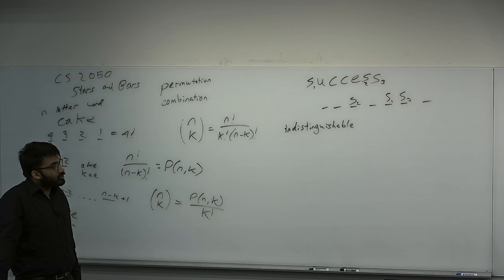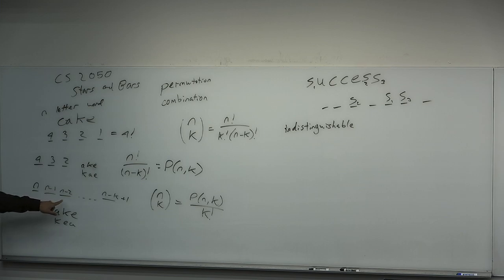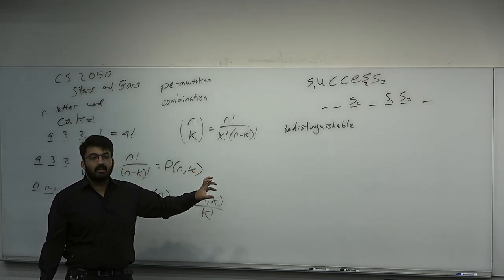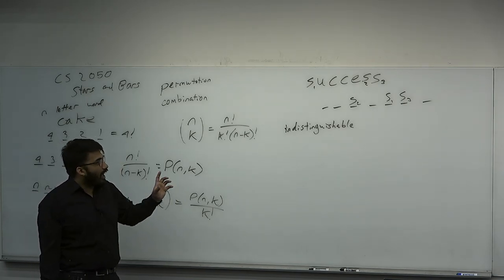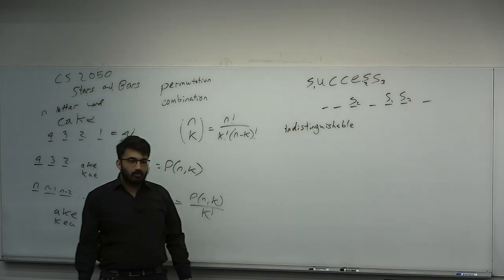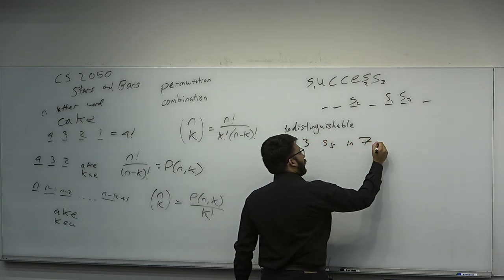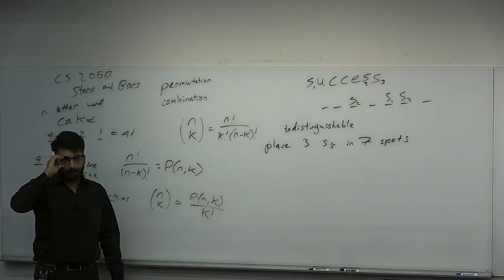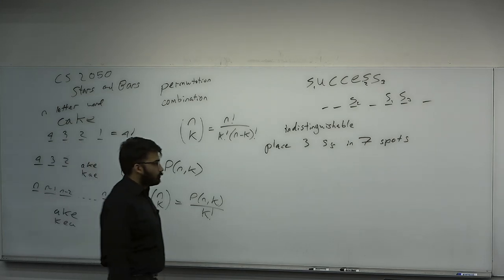What we can do is choose the placements of each letter and then apply the product rule. Suppose we consider s first. We have seven spots. How many ways are there to place three s's in seven spots where the s's look the same? Seven choose three — because it's the position that matters, not the order. So we just choose three positions out of seven. The word 'indistinguishable' here basically means it doesn't matter what order you put the s's, only the places that you put them. So you do seven choose three.